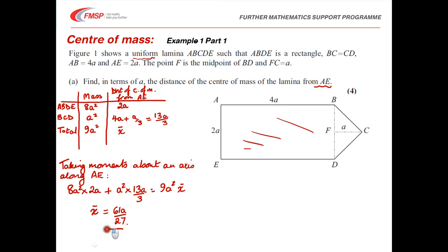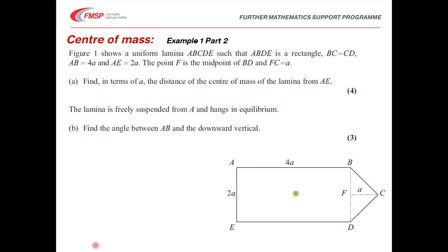We now move into a hanging question. The lamina is freely suspended from A, so the pivot is at A and it hangs in equilibrium. For it to hang in equilibrium, the centre of mass must be directly below the pivot point. We know the centre of mass is a little to the right of the middle of the rectangle. I'm going to draw a straight line representing the vertical, because the overall weight of the lamina must act through the centre of mass and also through the pivot.